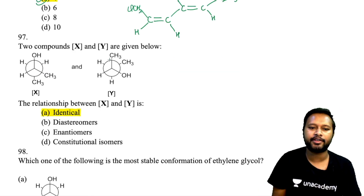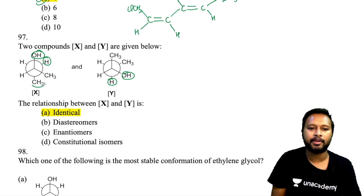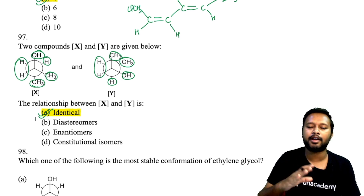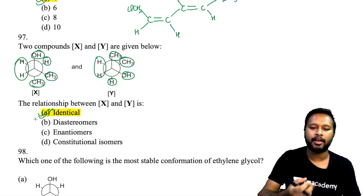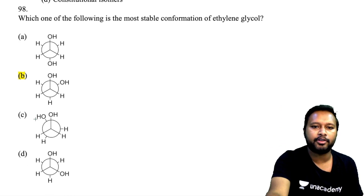Question 97 asks the relationship between two conformations drawn as Newman projections. Checking gauche interactions: OH is gauche to H, methyl is gauche to methyl, and hydrogens are gauche to each other. Using R/S analysis, both conformations are found to be RR or SS — they are identical (the same compound). They are identical conformers.